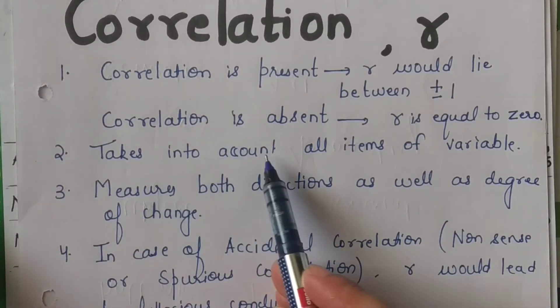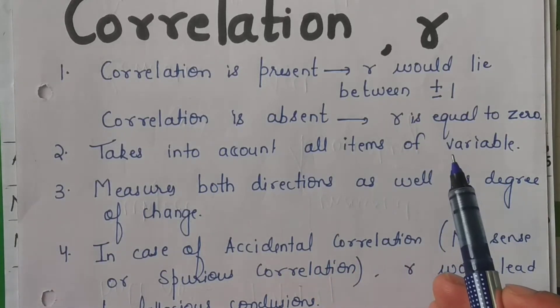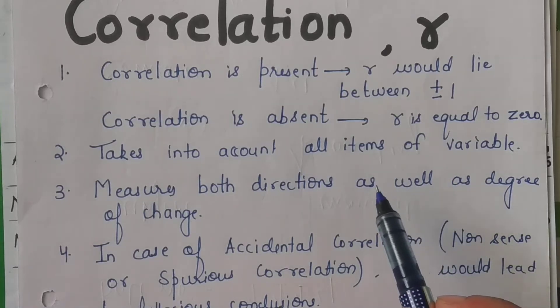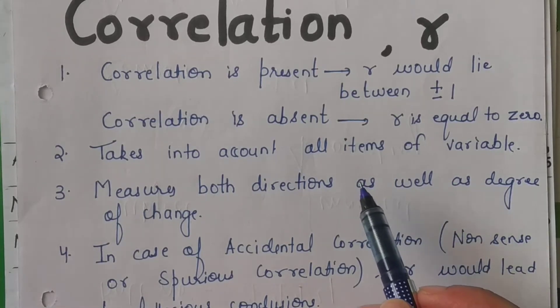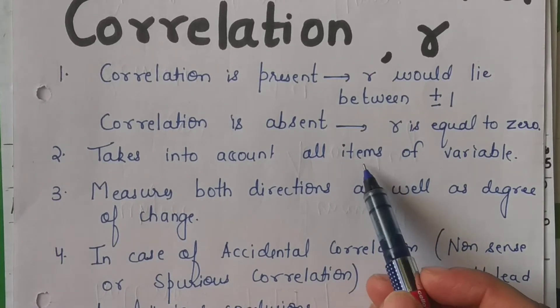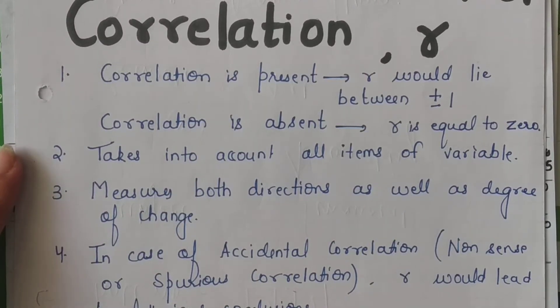Now the second property: it takes into account all the items of the variables, which are the two variables that we have studied and analyzed, all the items, all the observations, all the values that we have considered.